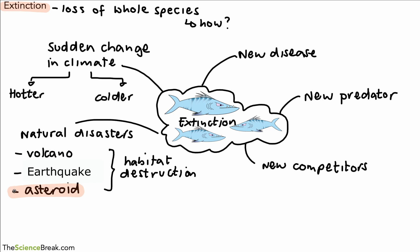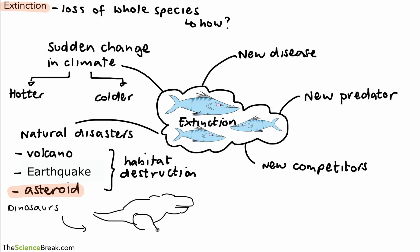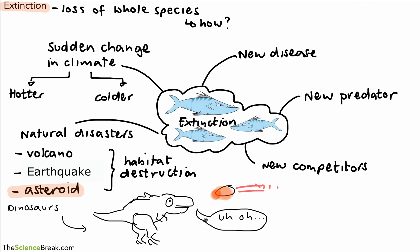Interestingly, with asteroids, this is how scientists think that dinosaurs became extinct about 65 million years ago — by the destruction of major habitats across the whole planet. The dinosaurs were no longer able to cope with the environment and so they became extinct. Here's our dinosaur, which is purple for some unknown reason.